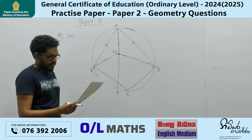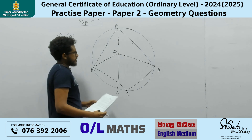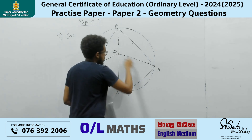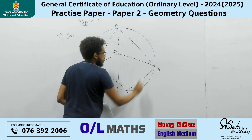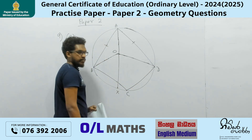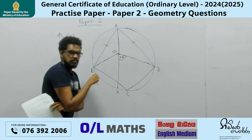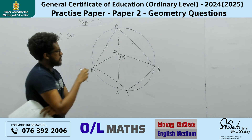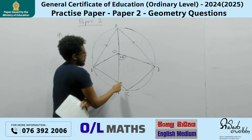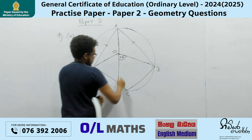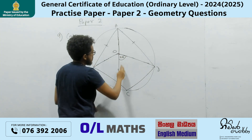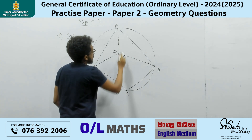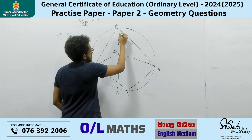DOX plus BCD equals 180. DOX plus BCD equals 180. So I took DOX as 2 theta. Then what about this? This has to be theta.